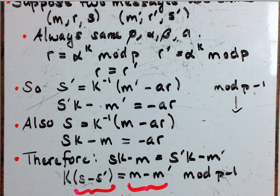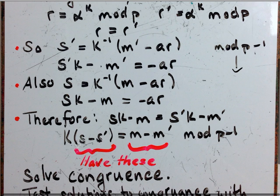So Eve, the person who's trying to forge, was able to intercept both of these. So she has M, S, M prime, S prime. So essentially, what you end up with here is a congruence. You have K times a constant. It's congruent to a constant, mod P minus 1, which we also have.